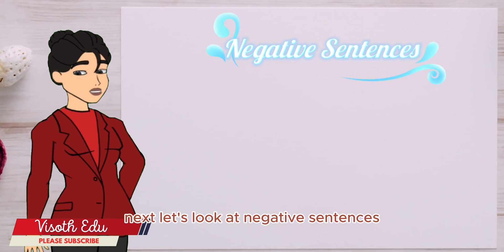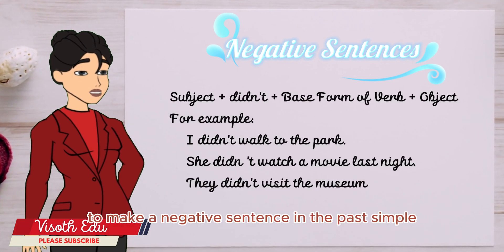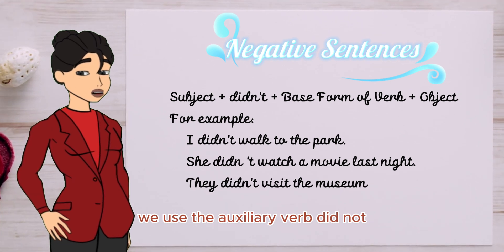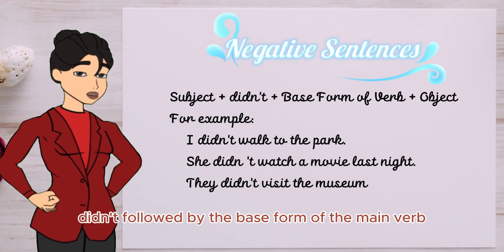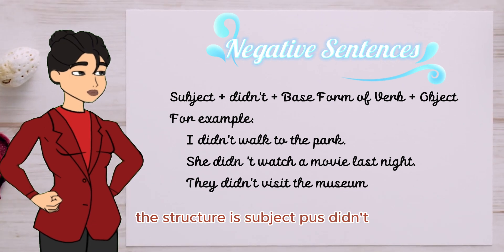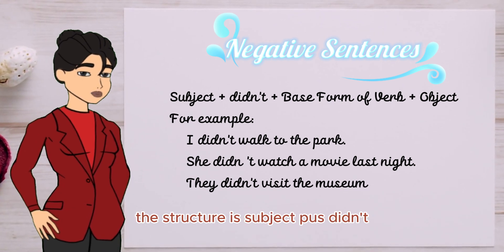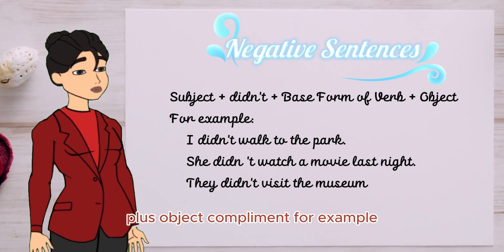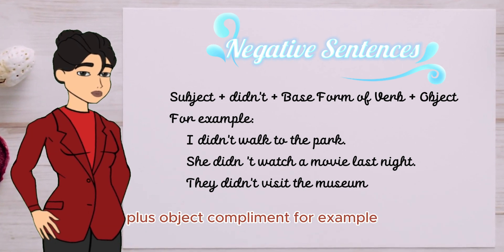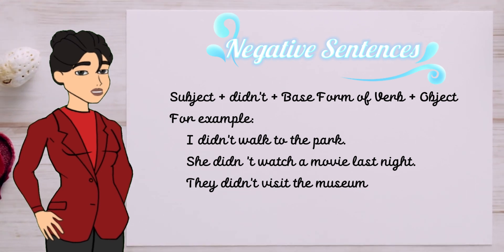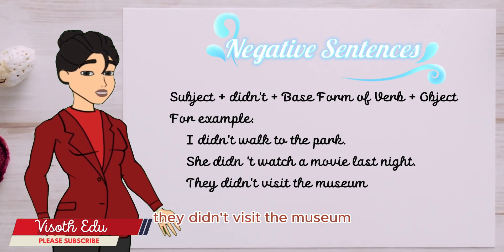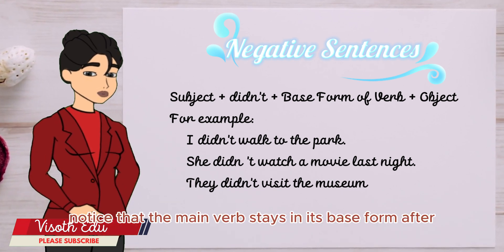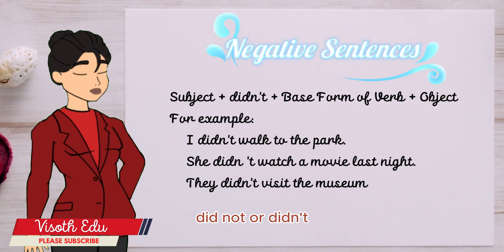Next, let's look at negative sentences. To make a negative sentence in the past simple, we use the auxiliary verb "did not" (didn't), followed by the base form of the main verb. The structure is: subject + didn't + base form of verb + object/complement. For example: "I didn't walk to the park." "She didn't watch a movie last night." "They didn't visit the museum." Notice that the main verb stays in its base form after "did not" or "didn't".